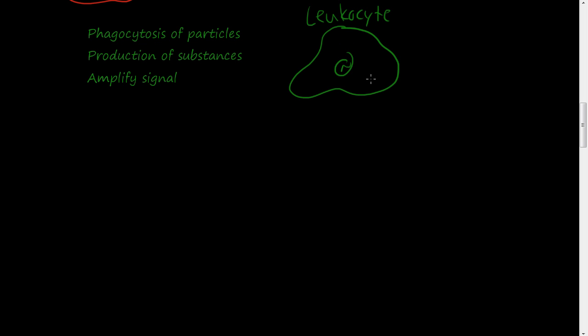Once this leukocyte or white blood cell is activated, what it will do, if there's a bacteria over here for example, it will send out little arms if you will, pseudopods they call them. And it will kind of pull this bacteria inside here. That's what's called phagocytosis. It will pull this bacteria, or whatever it needs to ingest, and it will pull it inside itself so it can contain it.